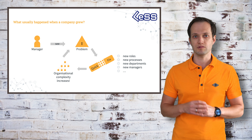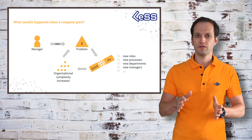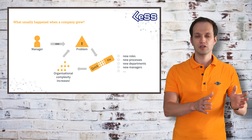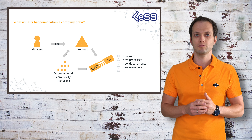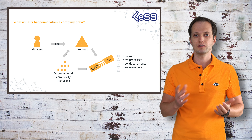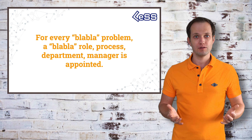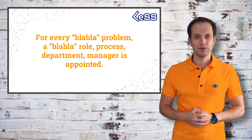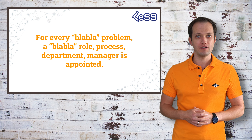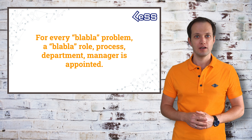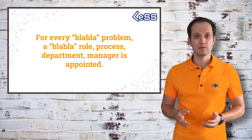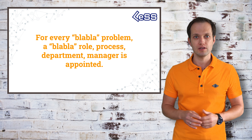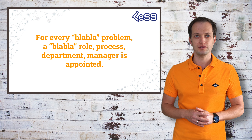So as you can see, for every problem a quick fix was applied, which increased the organizational complexity and led to another problem. It's a cycle. The general pattern then becomes: for every problem, a role, process, department, or manager is appointed.